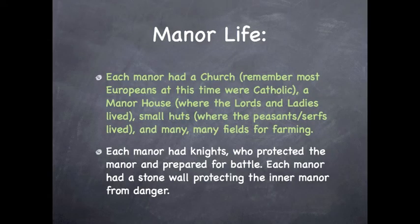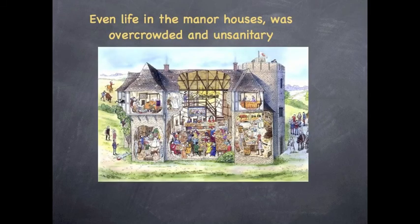Manor life: Each manor had a church — remember that most Europeans at this time were Catholic — a manor house where the lords and ladies lived, small huts where the peasants and serfs lived, and many fields for farming. Each manor had knights who protected the manor and prepared for battle, and a stone wall protecting the inner manor from danger. It's important to remember that many people, especially the wealthy back then, did not live the way we assume the wealthy would live today — they lived in very overcrowded and unsanitary conditions.